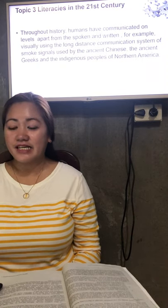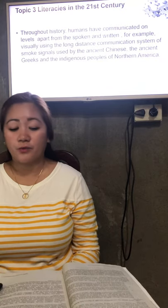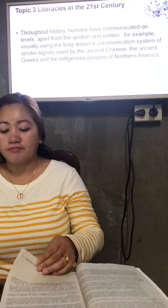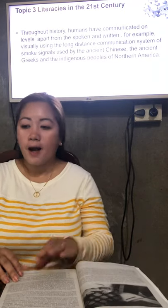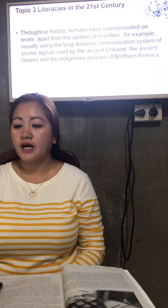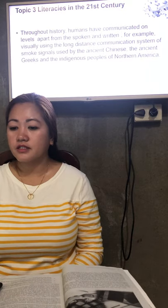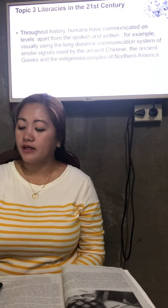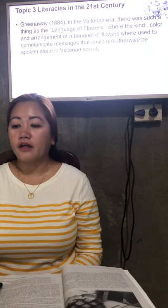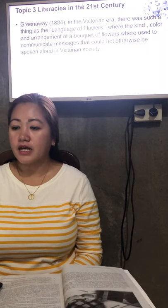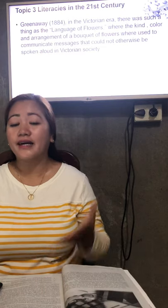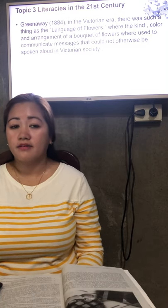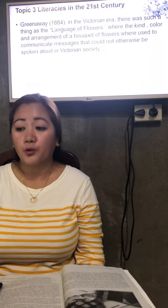Topic 3: literacies in the 21st century. Throughout history, humans have communicated on levels apart from the spoken and written. For example, visually — using long-distance communication systems like smoke signals used by the ancient Chinese, the ancient Greeks, and the indigenous people of northern America. In the Victorian era (Greenway, 1884), there was such a thing as the language of flowers — even flowers had a language. The color and arrangement of a bouquet of flowers were used to communicate messages.